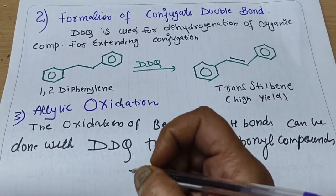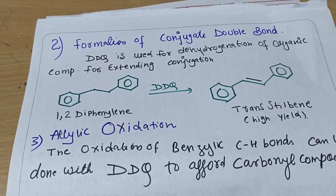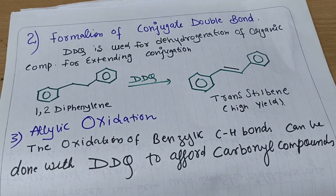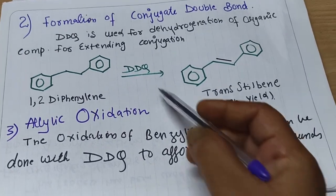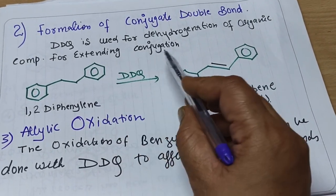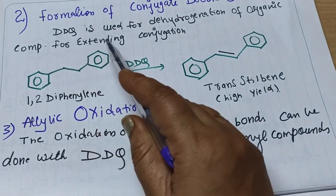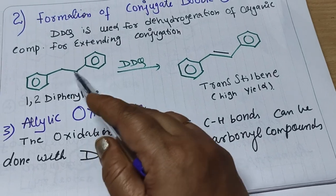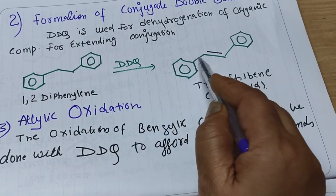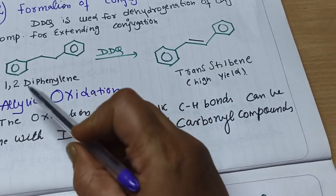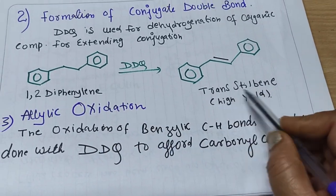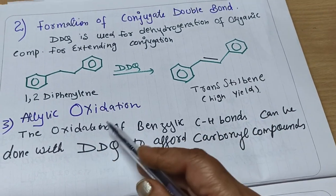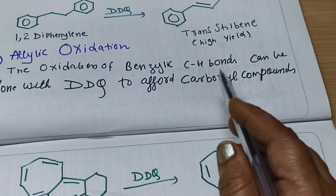The next application is the formation of conjugated double bonds. DDQ is used for the dehydrogenation of organic compounds for extending conjugation. For example, where there is no double bond and CH2-CH2 is present, removing hydrogens introduces a double bond. Thus 1,2-diaphenylene is converted to trans-stilbene, and high yields are obtained in this type of reaction.